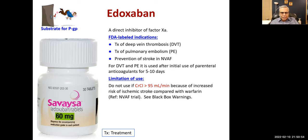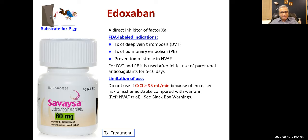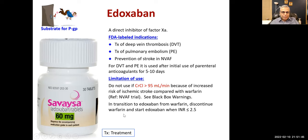Limitation of use: do not use edoxaban if creatinine clearance is greater than 95 ml/min due to increased risk of ischemic stroke compared with warfarin — this is a black box warning. Note that creatinine clearance is slightly more than GFR because creatinine is also secreted in the proximal tubule, making it a good but slightly overestimated measure of GFR. In transition from warfarin to edoxaban, discontinue warfarin and start edoxaban when INR is 2.5.